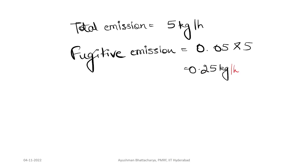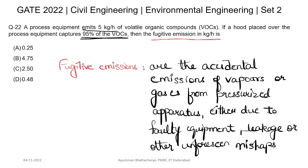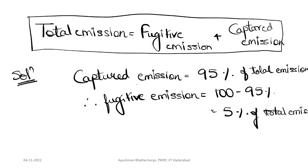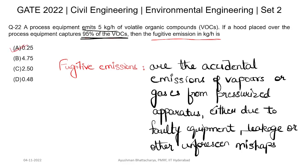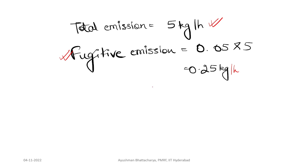So the fugitive emission is 0.25 kg per hour. Initially we defined fugitive emissions as accidental emissions of vapors or gases from pressurized apparatus. The captured emission was 95 percent, so fugitive emission is 5 percent of 5 kg per hour, giving 0.25 kg per hour as the answer. Option A is the correct answer.